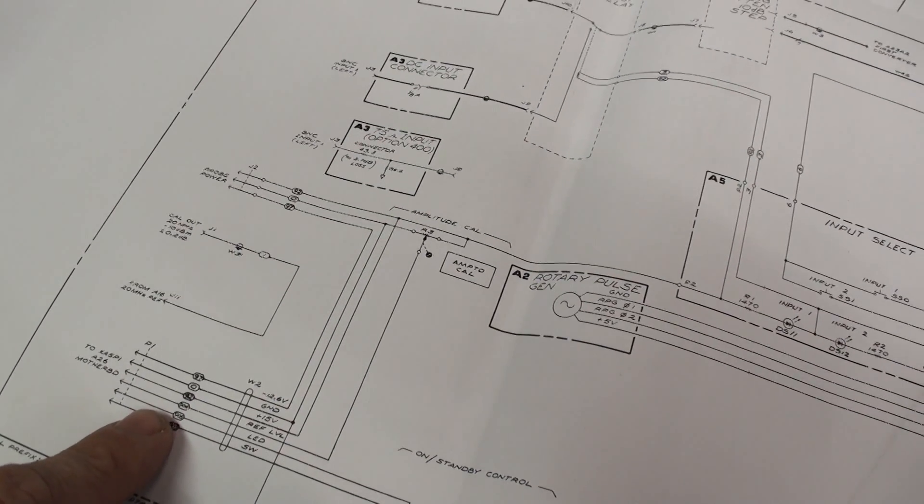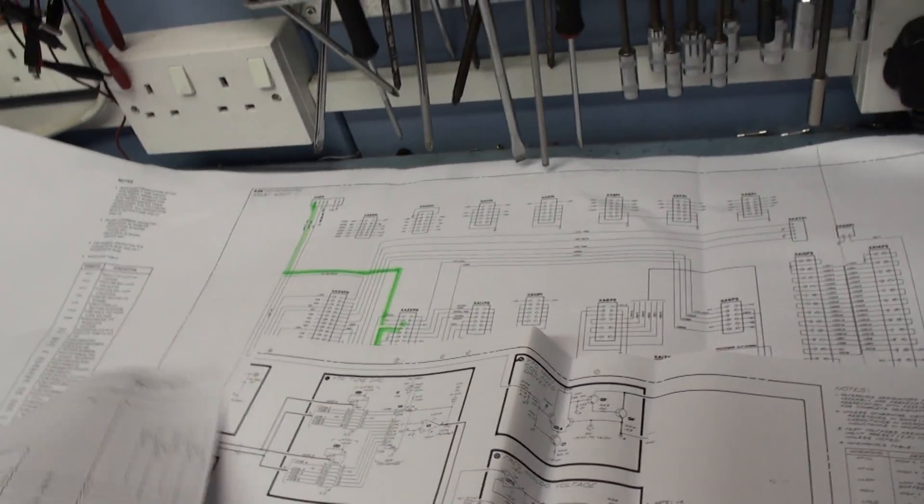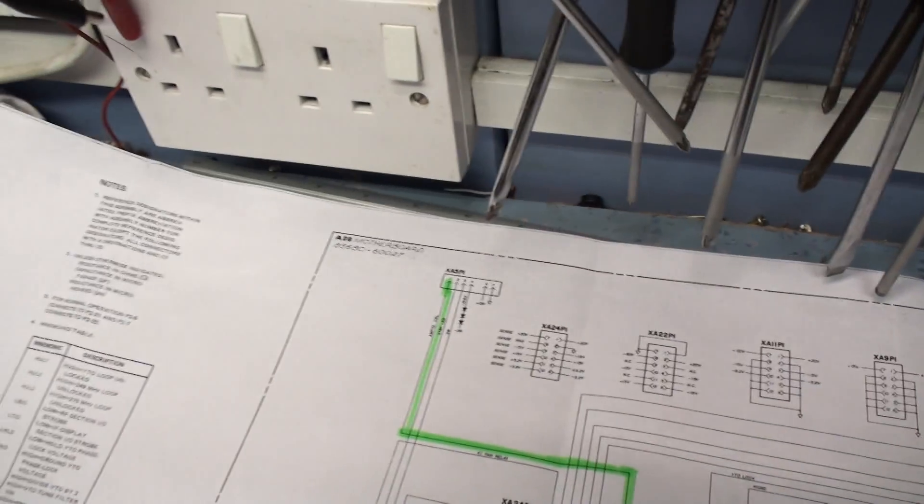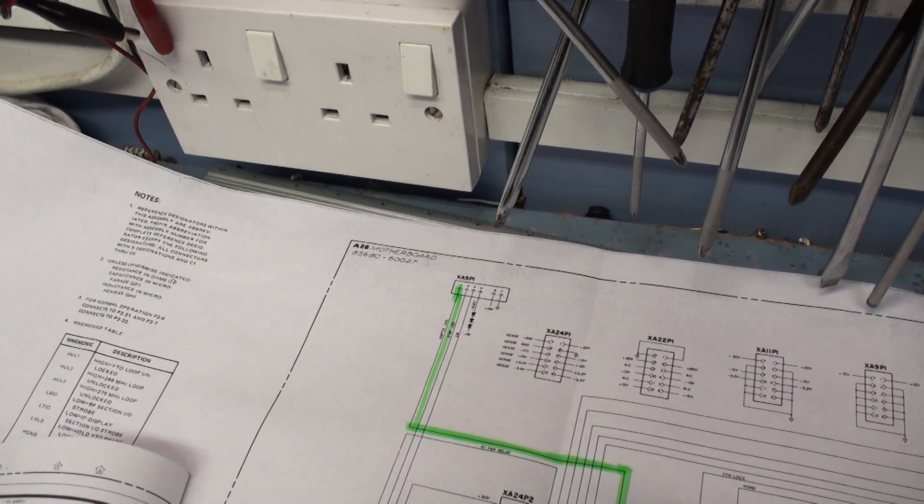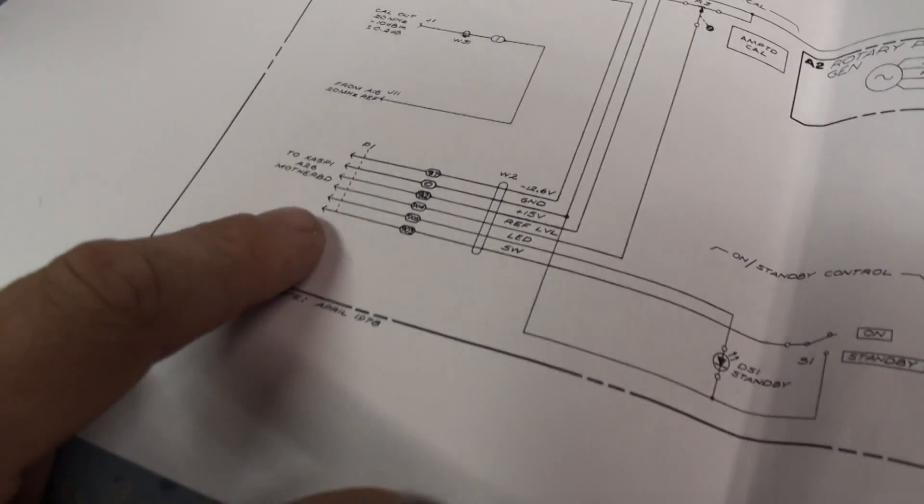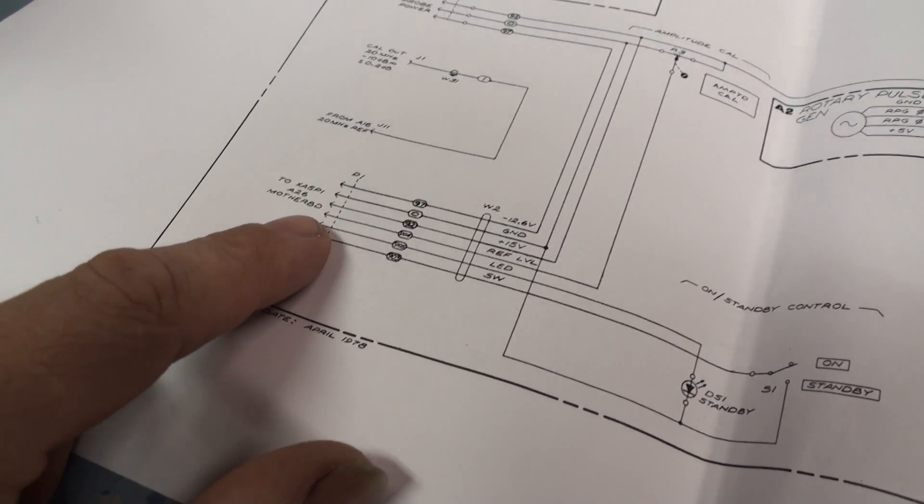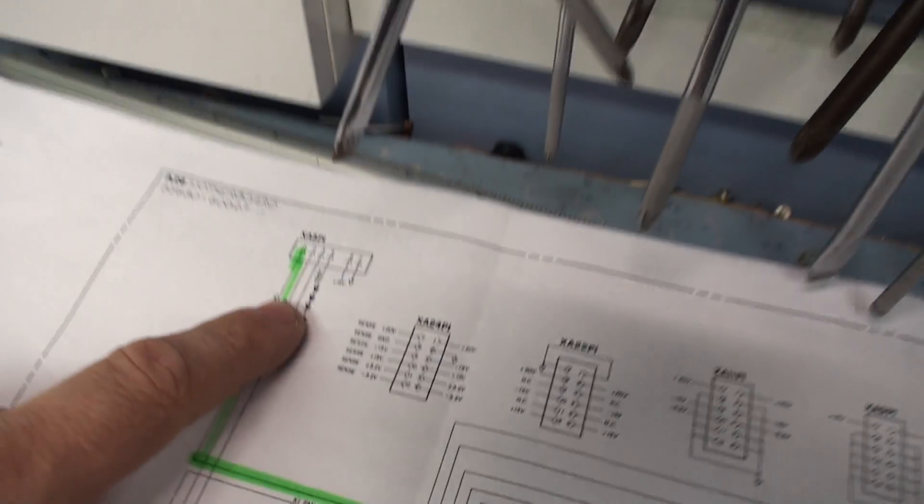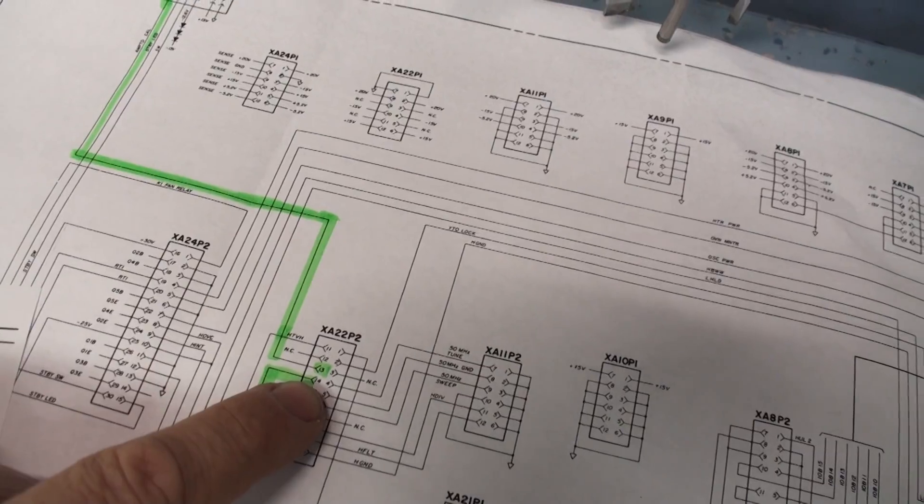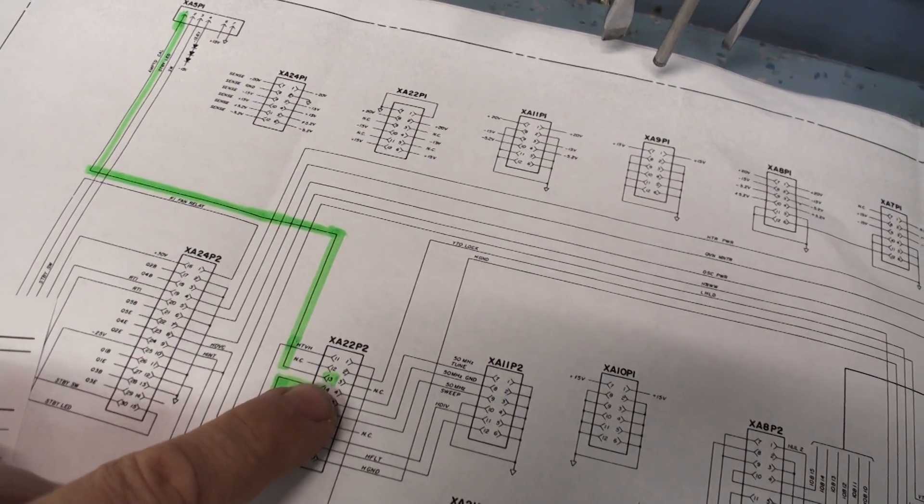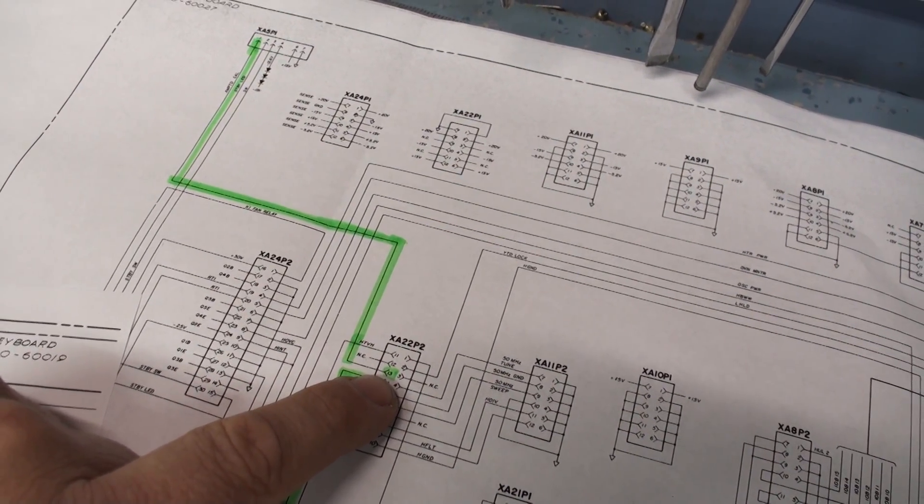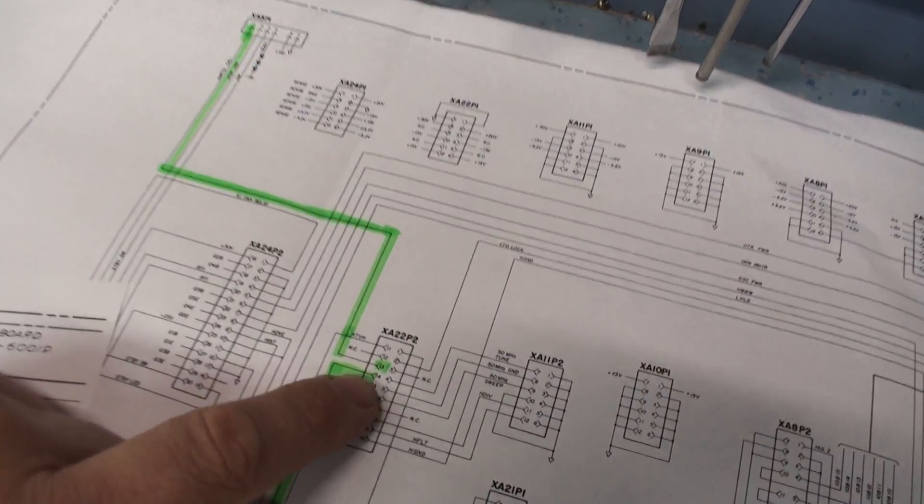Now, follow it through on the motherboard circuit diagram, which is this big circuit here. I printed all these out from the manual, so it means I can highlight them and things. This is the connector you see on the front panel. It leaves the front panel and goes to this connection here. The XA5P1, the A26 board, which is the A26 is the motherboard. There it goes there. And it comes through here, down. And it's first board of call is board 22, P2. Now what that means is, it'll be the A22 board, and it'll be on the plug 2.